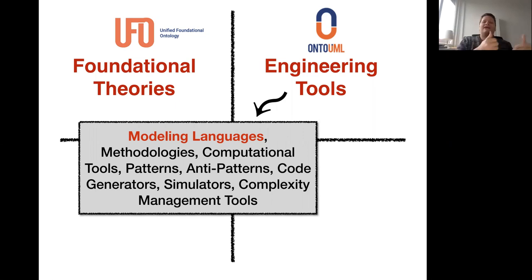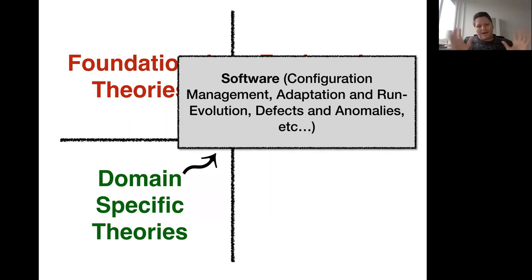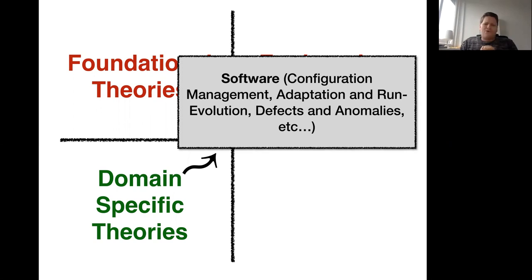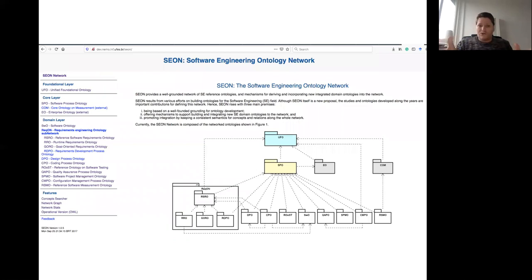Once we have these tools, we can build domain-specific theories in several domains. For example, in software engineering we have a network of domain ontologies dealing with configuration management, software adaptation requirements, software defects and anomalies, and so on — materializing as a network of models called SEON, the Software Engineering Ontology Network.